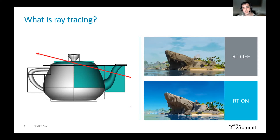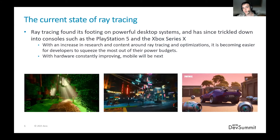This technique was first achieved on computers in 1968. However, since it is computationally expensive, it simply wasn't viable as a real-time solution, so for real-time graphics we needed to use a simpler model known as rasterization. In 2018, this all changed when desktop machines became capable of real-time ray tracing. Today, consoles are even capable of ray tracing solutions. Games such as Fortnite and Cyberpunk 2077 all have ray tracing technology, and games like Minecraft have introduced it into their graphics engines. With hardware constantly improving, mobile will be next.